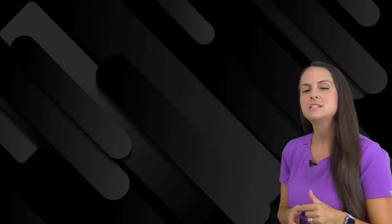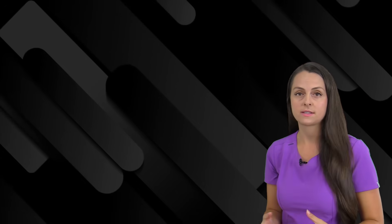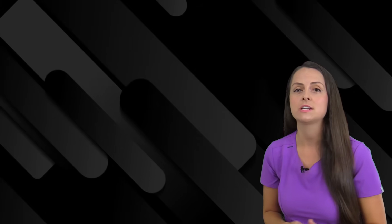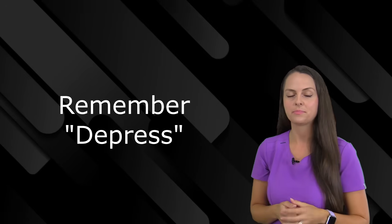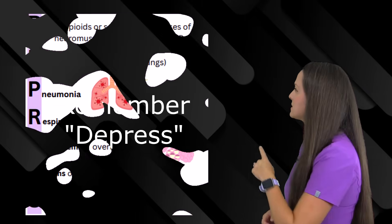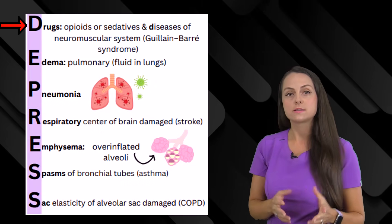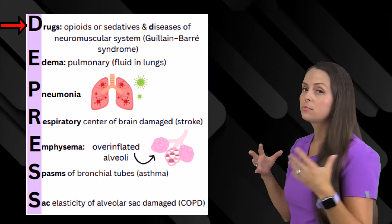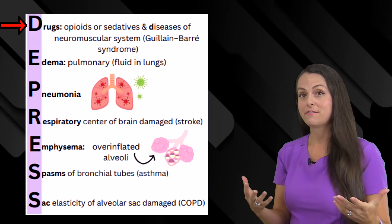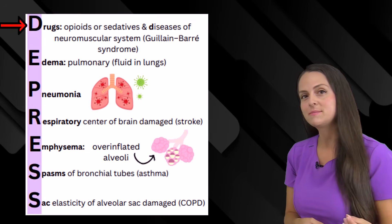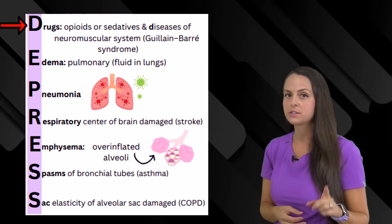Let's look at some conditions that can lead us to retain carbon dioxide. We've established there's a depression in lung ventilation — either we're breathing too slowly, there's damage to gas exchange structures, or the respiratory muscles are too weak to exhale the carbon dioxide. To remember the causes, let's use the word DEPRESS. D is for drugs such as opioids and sedatives — those are really big ones. They depress your respiratory rate, causing the patient not to breathe very fast. Whenever you give these medications, you definitely need to monitor your patient's breathing rate.